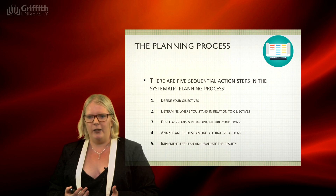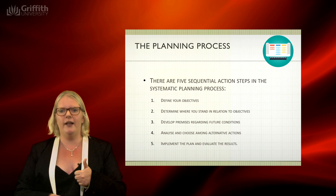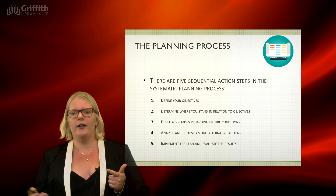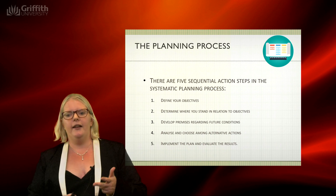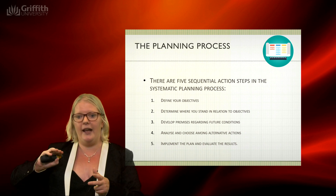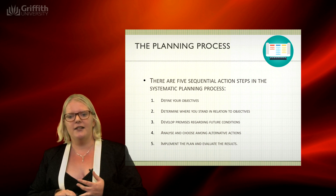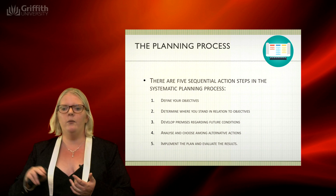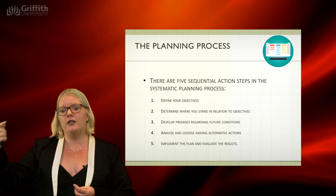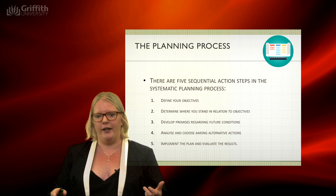In order to set a plan, there are five sequential action steps in the process. First, define your objective — where do we want to go? Second, determine where you stand in relation to those objectives. Third, develop premises regarding future conditions. Fourth, analyze and choose among alternatives, since there are multiple ways to get there. Fifth, implement the plan and evaluate.